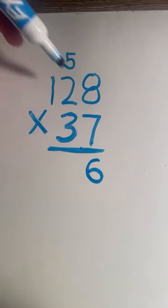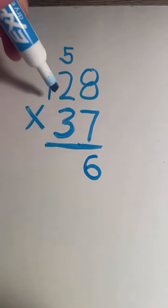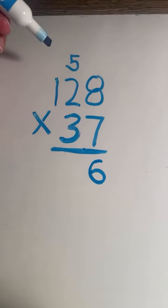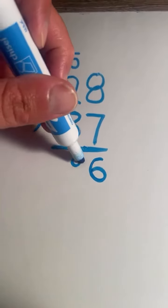Next we're going to multiply 2 times 7, and then we have to add the 5 that we carried over. So 2 times 7 equals 14, plus 5 equals 19. So again we've got to regroup. The 9 in 19 goes in the tens place.